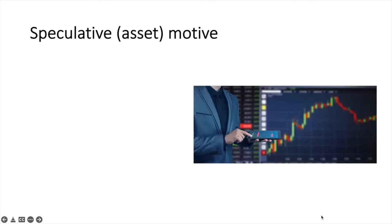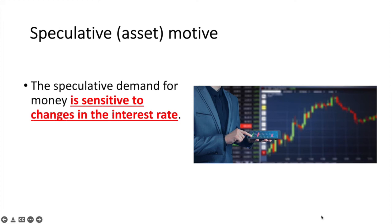Now finally we have the speculative or asset motive. The speculative demand for money is sensitive to changes in the interest rate. It applies to speculative balances kept as the interest rate varies. So when interest rates are high the demand for money is low whereas when interest rates are low the demand for money is high.